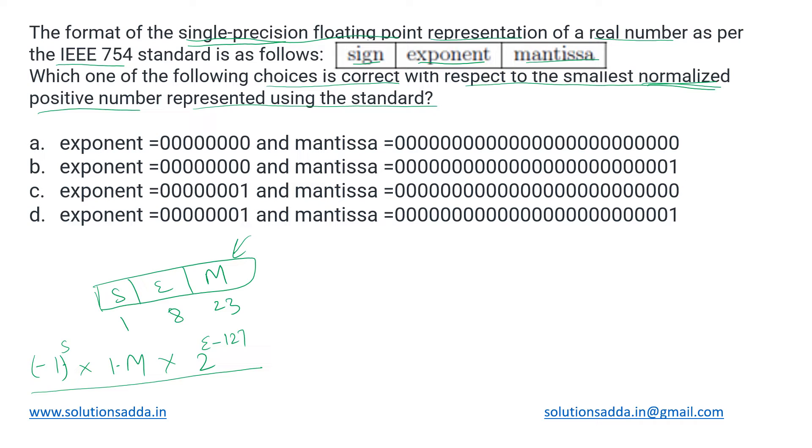This is how we represent the numbers using this representation. If we were to find out the smallest possible positive number, then what would be the values of exponent and the mantissa? Now we know that if we have exponent as all zeros, means eight zeros are there in the exponent, and in mantissa part we have all zeros again, then this represents a zero.